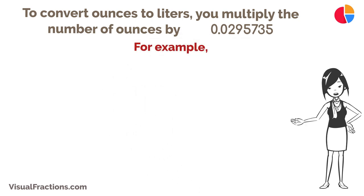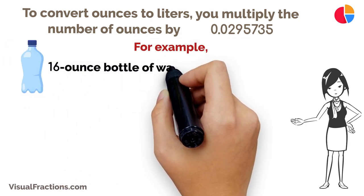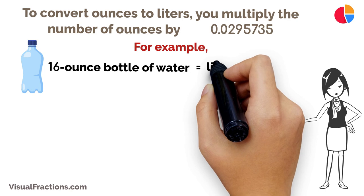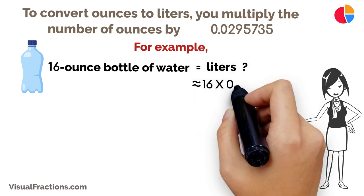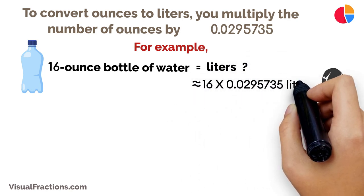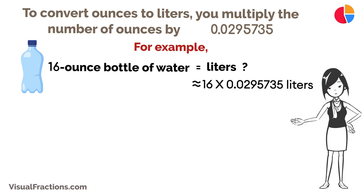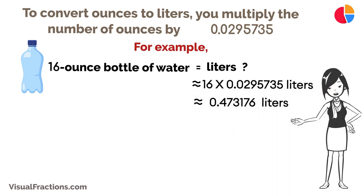For example, if you have a 16-ounce bottle of water, to find out how many liters that is, you would multiply 16 ounces by 0.0295735 to get approximately 0.473176 liters.